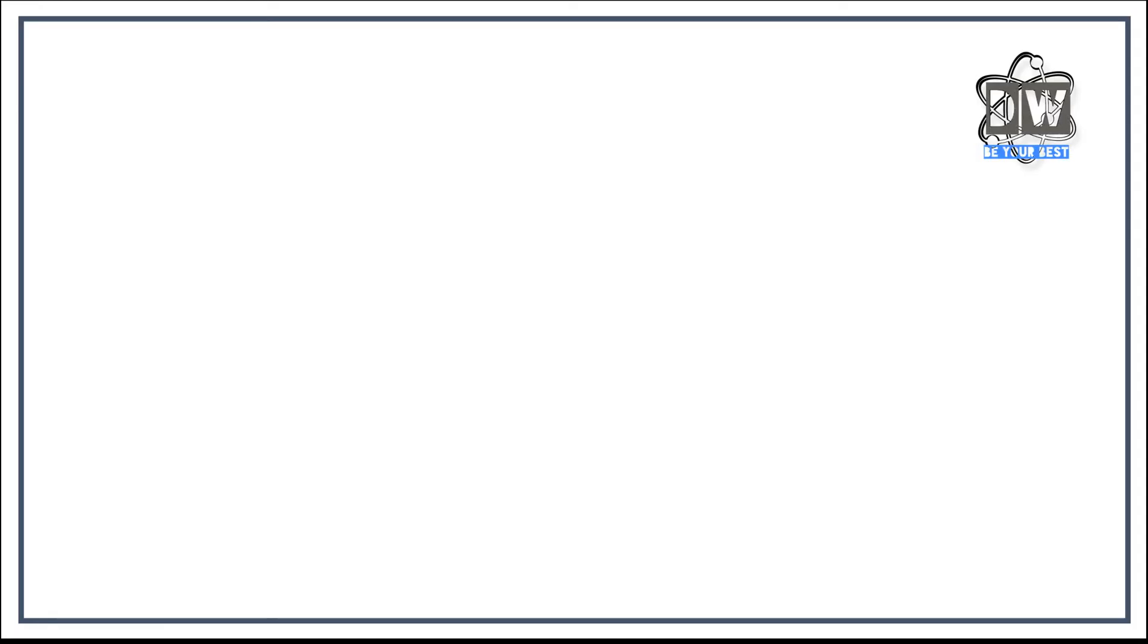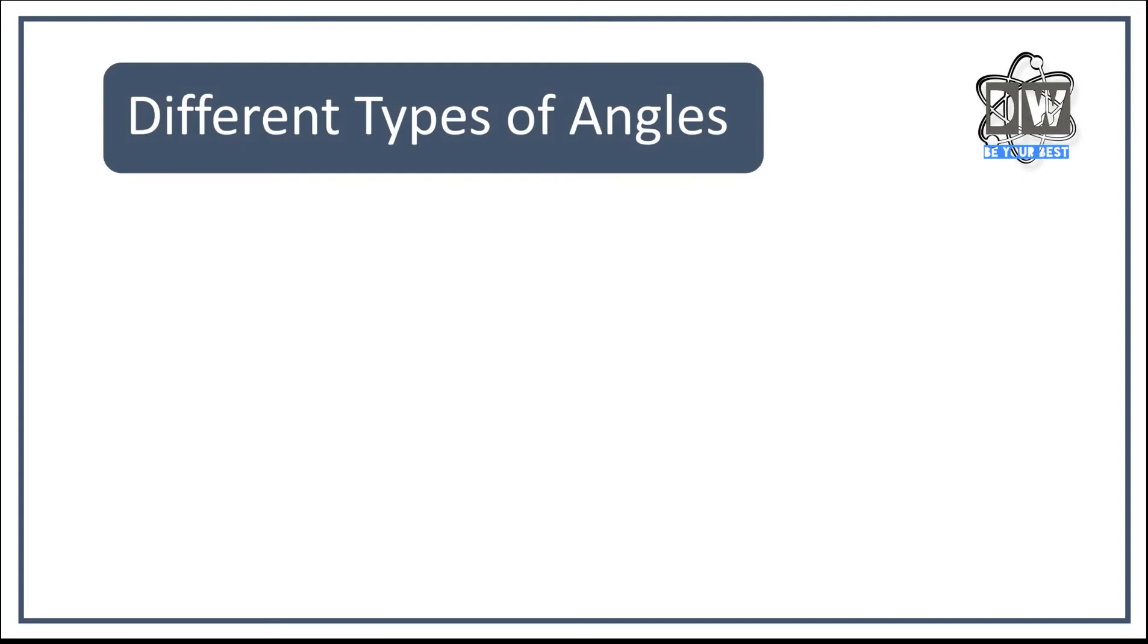So it's types of angles and it's memory. Hopefully I'll give you some little bits and pieces that are going to help you with that memory, different types of angles. So we can name angles certain things. And some of the easiest questions we can have on maths is name this type of angle. So we're going to go through those now.